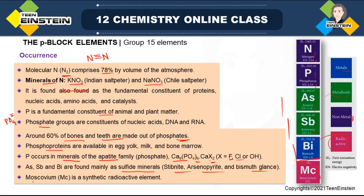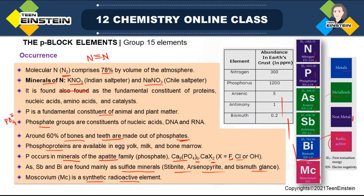Moscovium (Mc) is not only radioactive but also a synthetic element — it does not occur in nature. In terms of abundance in the Earth's crust, phosphorus is the most abundant at 1200 ppm, followed by nitrogen at 300 ppm, while arsenic, antimony, and bismuth are very low at around 0.2 ppm.